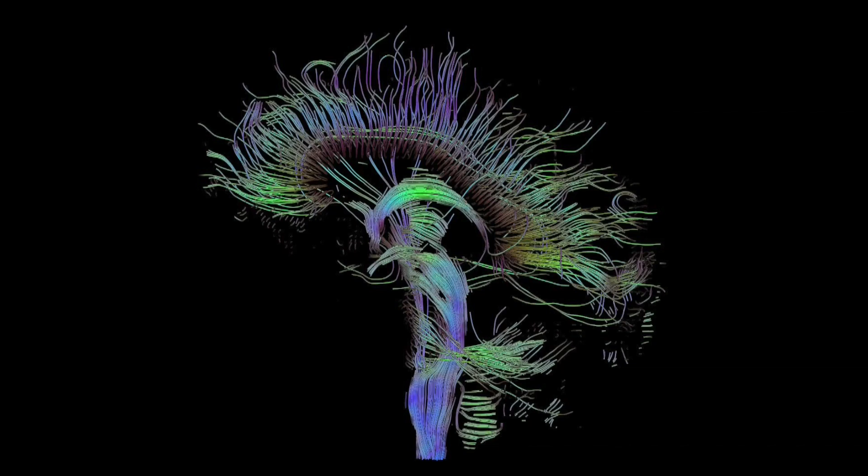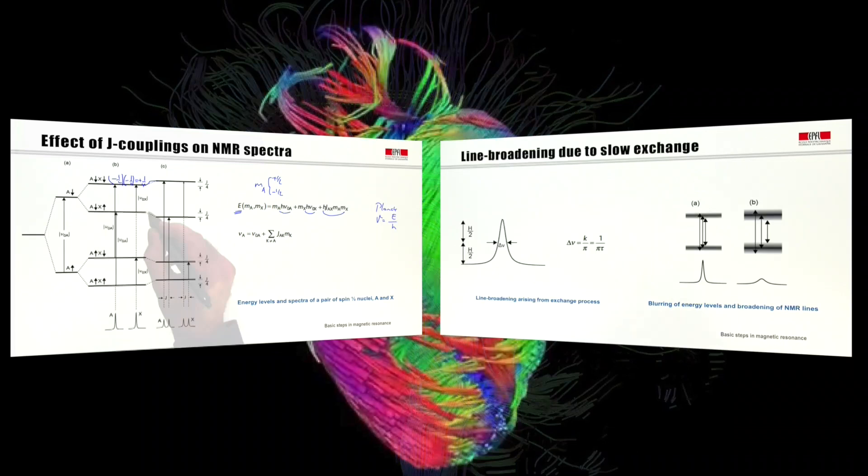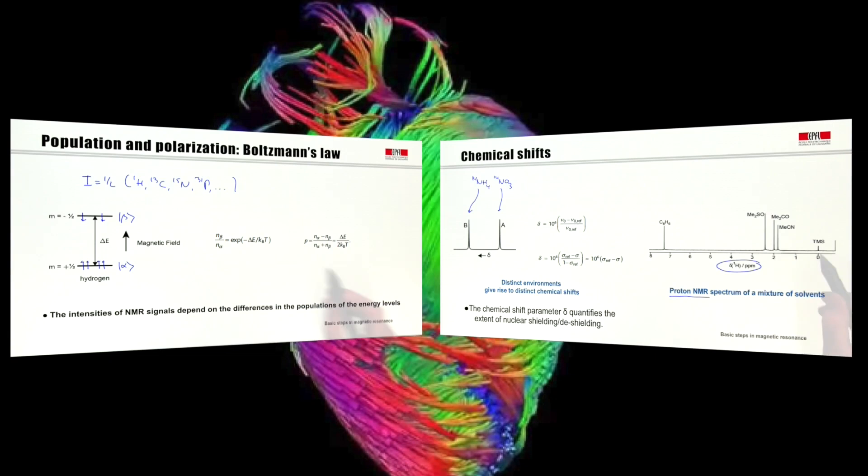Throughout the course, we will be covering subjects like chemical shifts, scalar couplings and dipolar couplings, chemical reactions, and the return of the magnetization to its equilibrium — a process that we call relaxation — and also methods for recording signals, including Fourier transforms and the like. The main objective of this course is to give you a basic understanding of how magnetic resonance actually works.